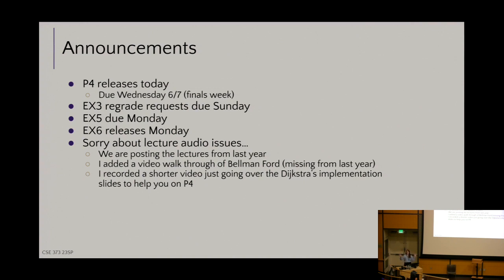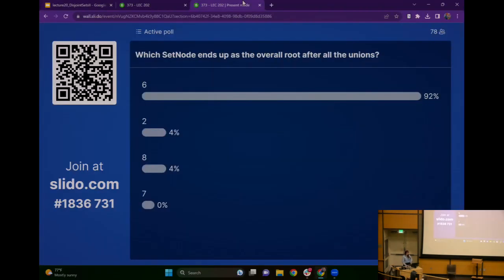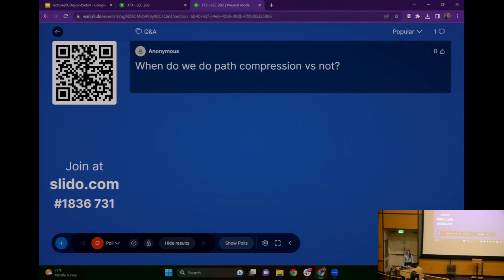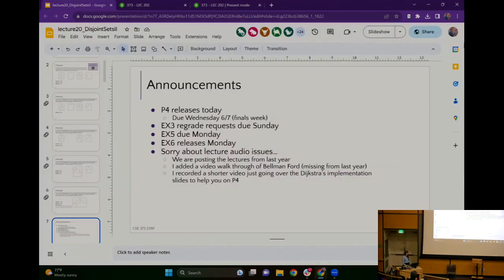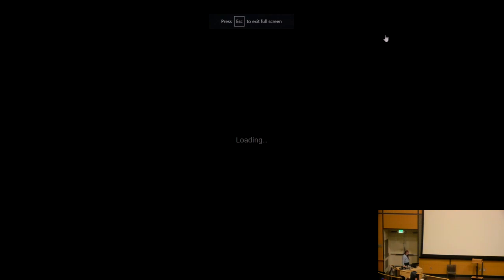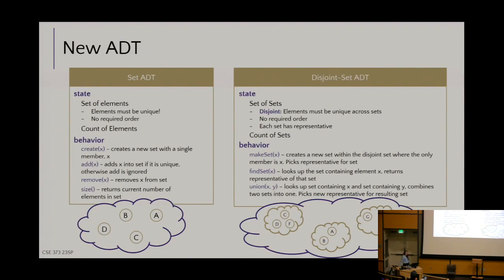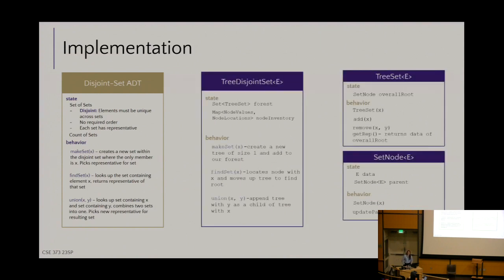All of that will be posted — hopefully that fills the gap of any missing audio. Please let us know if you encounter any other weird recording issues. Okay, let's dive back into disjoint sets. The slides were a little messy on Wednesday; I went back and cleaned them up. Remember: a disjoint set is a set of sets. We're implementing them with a tree structure where the overall object is the TreeDisjointSet, and it has a set of TreeSets that we call the forest — the collection of trees.